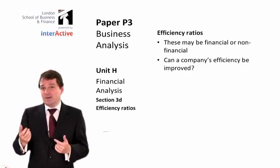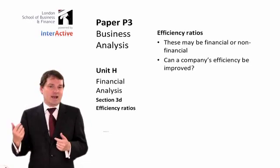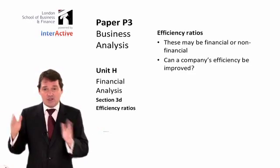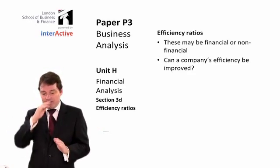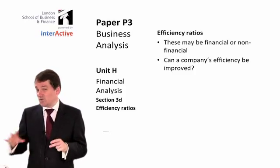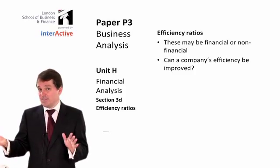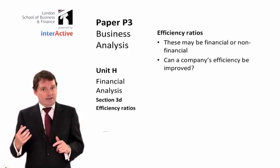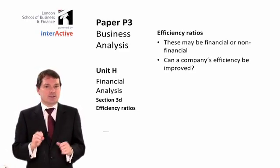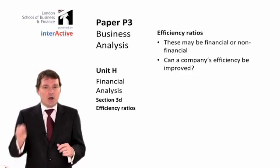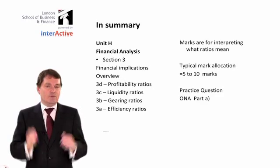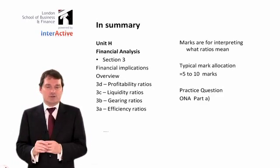This topic will probably be worth between about five and ten marks on the exam, and it often turns up in two or three different questions — so five to ten marks per question. Finally, what you should now do is have a look at the practice question ONA Oceana National Airways Part A in the document that accompanies this lecture.